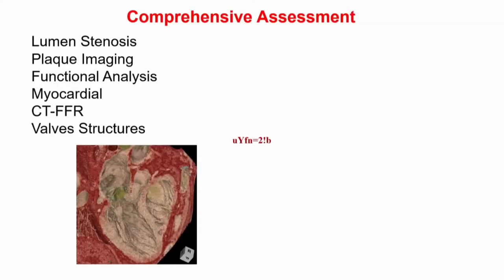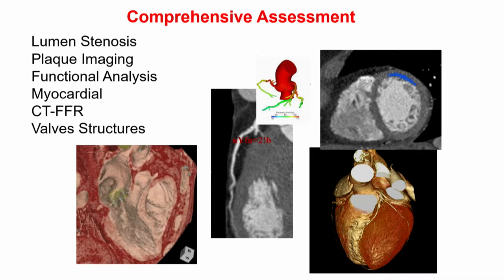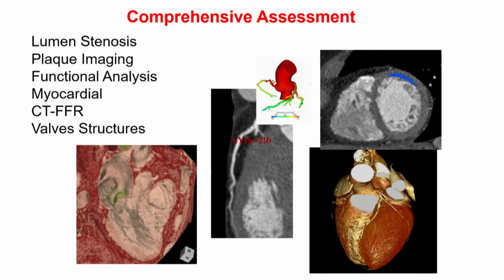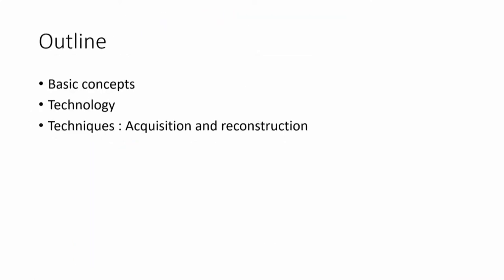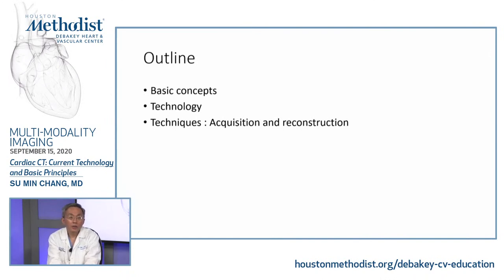Cardiac CT has become one of the most utilized non-invasive imaging modalities because it allows you to look at lumen stenosis of the coronaries, plaque characteristics, and can also give you functional analysis of LV function or coronary physiology, evaluate the myocardium, and has been very useful for valvular structure evaluation. Today the outline will cover basic principles, the technology behind generating these images, and techniques focused mostly on acquisition.